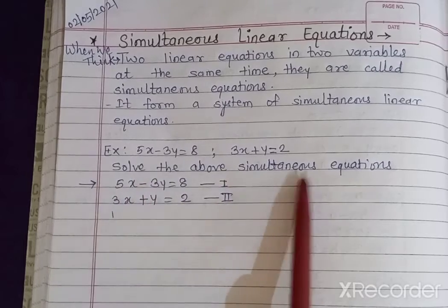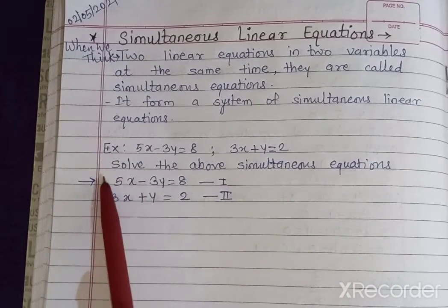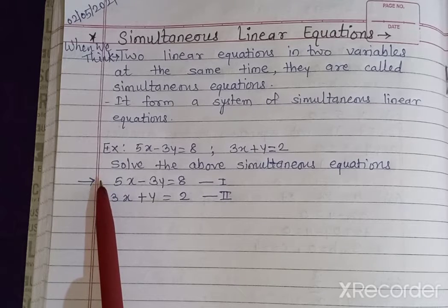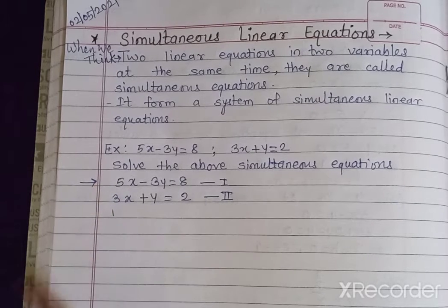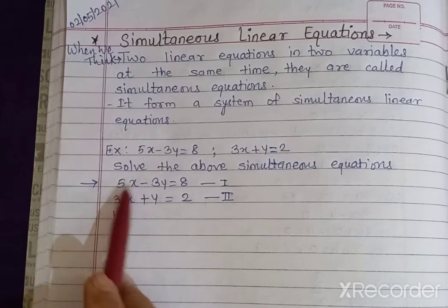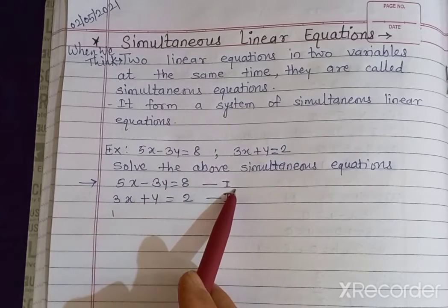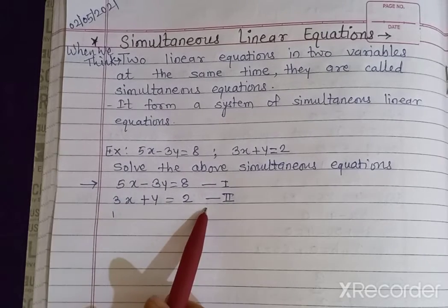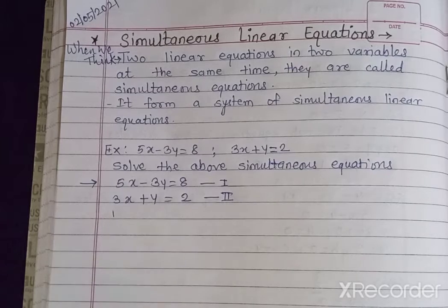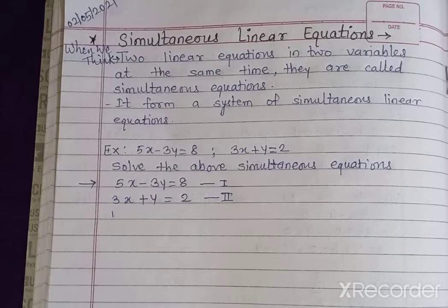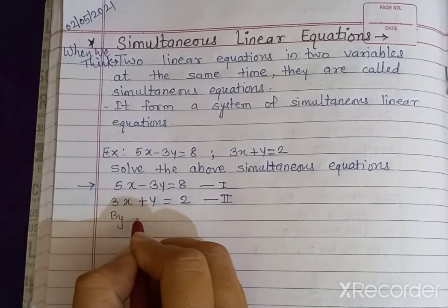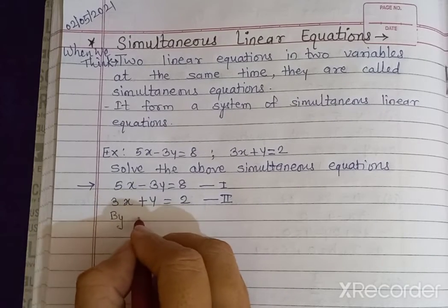Now let us solve the above simultaneous equations. I have taken this equation from page number 2 of our textbook — it is a solved example. Here 5x minus 3y is equal to 8 is the first equation and 3x plus y is equal to 2 is the second equation. We have studied in 9th standard by elimination method or by equating coefficients.